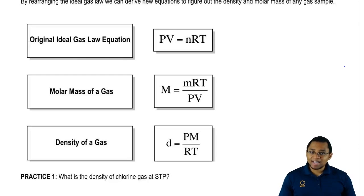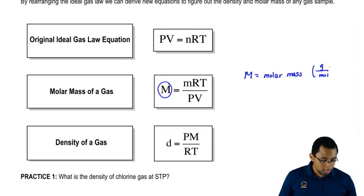To find the molar mass of a gas, we change it to this. Capital M is not molarity, it's molar mass. Remember the units for molar mass or molecular mass are grams per mole. The molar mass of a gas is equal to mRT over PV.